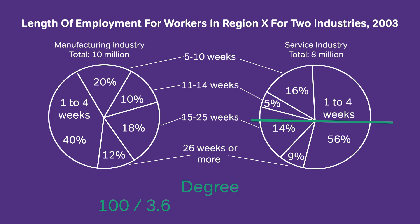So we can multiply each of these by 3.6 and find the difference. The difference between the two graphs is 5% — that's in pie chart land. In circle land, multiply it by 3.6, and you're going to get 18 degrees, which is answer choice D.